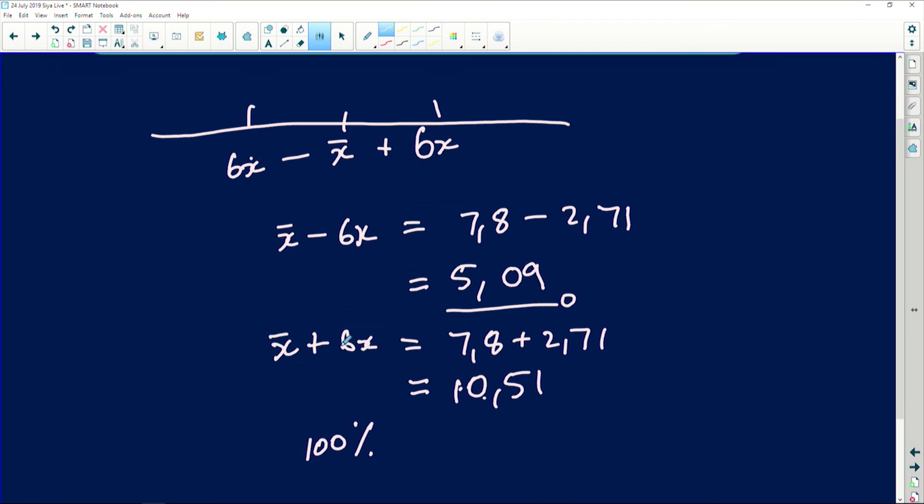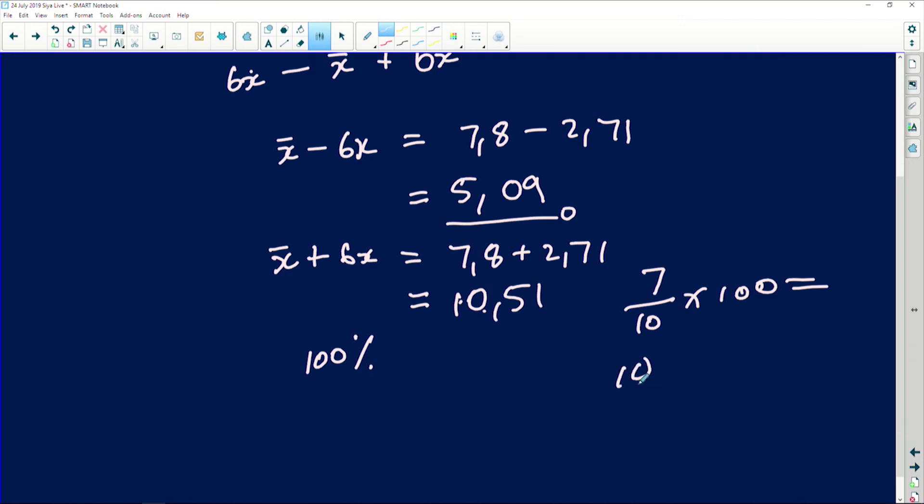So it would then mean that 100% of those numbers will then be lying within one standard deviation. What we are going to do is if we knew what maybe it was less, let's say I had 7 terms, I'd say 7 divided by the total multiplied by 100. And it will give me whatever percentage it gives me. But with this one, I have 10 out of 10 of the terms lying within one standard deviation which will then give me 100%. So that's what I have there.